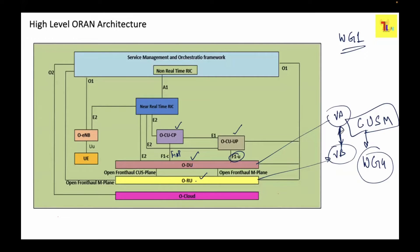Working Group 4 talks about latency requirements within the Control, User, Synchronization, and Management planes. The synchronization plane is used to achieve synchronization between DU and RU, since both can be from different vendors. The protocols used here are PTP plus SyncE protocols.